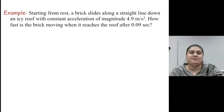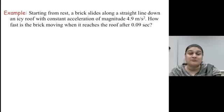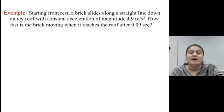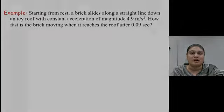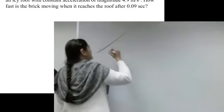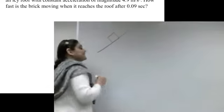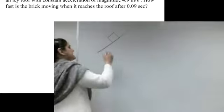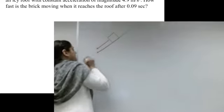Now here's a good simple problem. The problem says starting from rest, a brick slides along a straight line down an icy roof with constant acceleration whose magnitude is 4.9 meters per second. How fast is the brick moving when it reaches the roof after 0.09 seconds? This is a really good example. Now let's define what we mean by when we are talking about a brick starting from rest. In this problem it says that we have a roof and we have a block that's on the roof and it is sliding down from the roof until the edge, right?